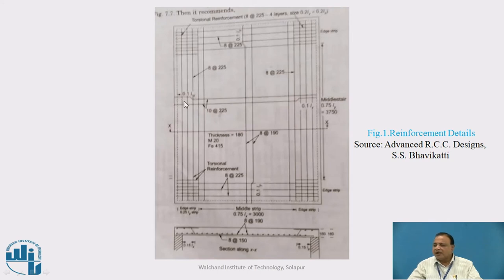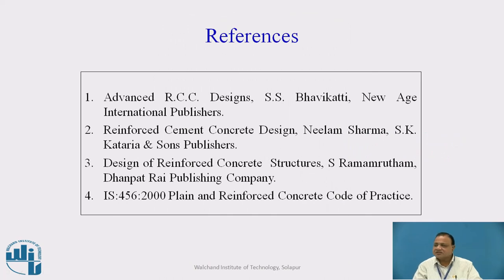This figure shows reinforcement in X direction: 10 mm diameter bars at 225 mm center to center, with alternate bars bent up. Reinforcement in Y direction: 8 mm diameter bars at 190 mm center to center, also with alternate bars bent up, because 50 percent of steel should go up to the end. Corner reinforcement: 8 mm diameter bar mesh at all four corners. Edge strip steel: in all four edge strips.